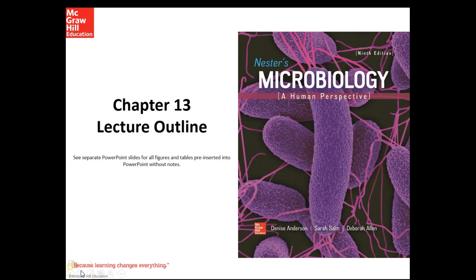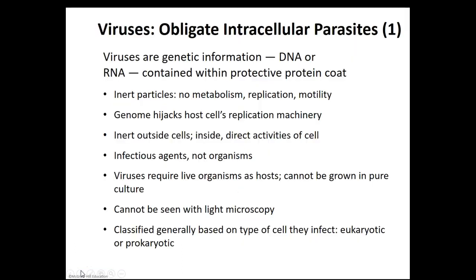In chapter 13, we'll take a look at viruses, viroids, and prions. Viruses are obligate intracellular parasites. What this means is that these viruses must absolutely enter a cell in order to cause the production of more virus. As they do so, ultimately they do damage or harm to that cell.